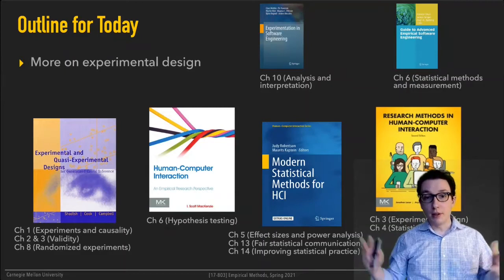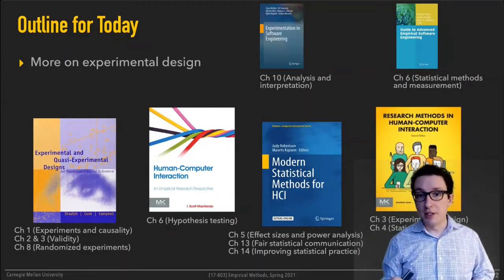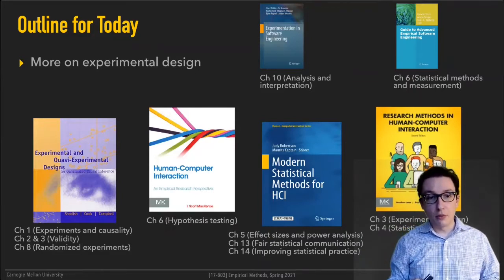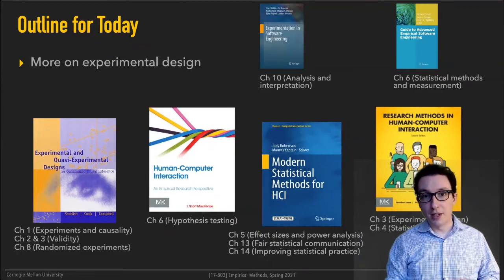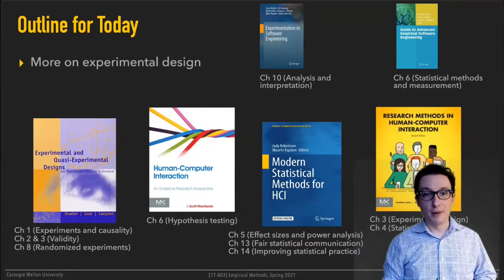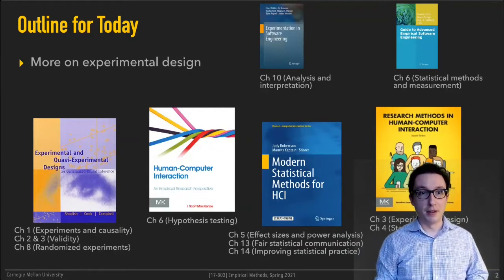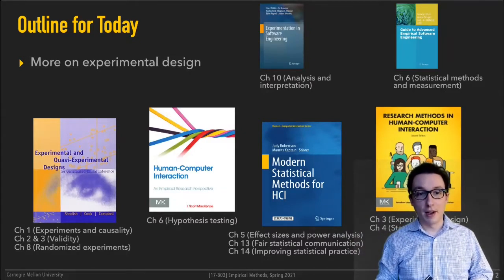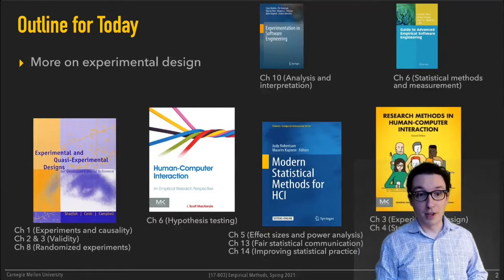So it turns out — and I knew this, but this was just confirmation — folks over in human-computer interaction have a much more developed literature on research methods compared to software engineering. There are amazing textbooks in human-computer interaction that talk about research methods, designing experiments, data analysis, statistics, and all these things that we care about in this class as well. So here are three that I found that I'm recommending.